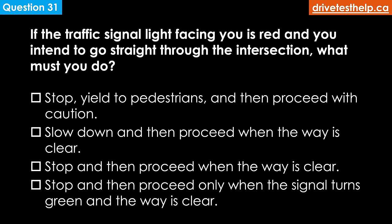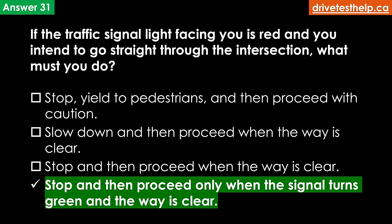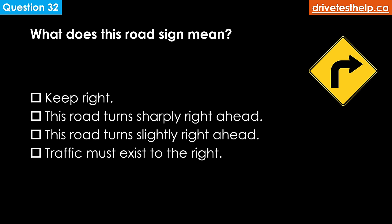If the traffic signal light facing you is red and you intend to go straight through the intersection, what must you do? Options: stop, yield to pedestrians, then proceed with caution; slow down then proceed when the way is clear; stop then proceed when the way is clear; stop then proceed only when the signal turns green and the way is clear. The correct answer is stop then proceed only when the signal turns green and the way is clear.